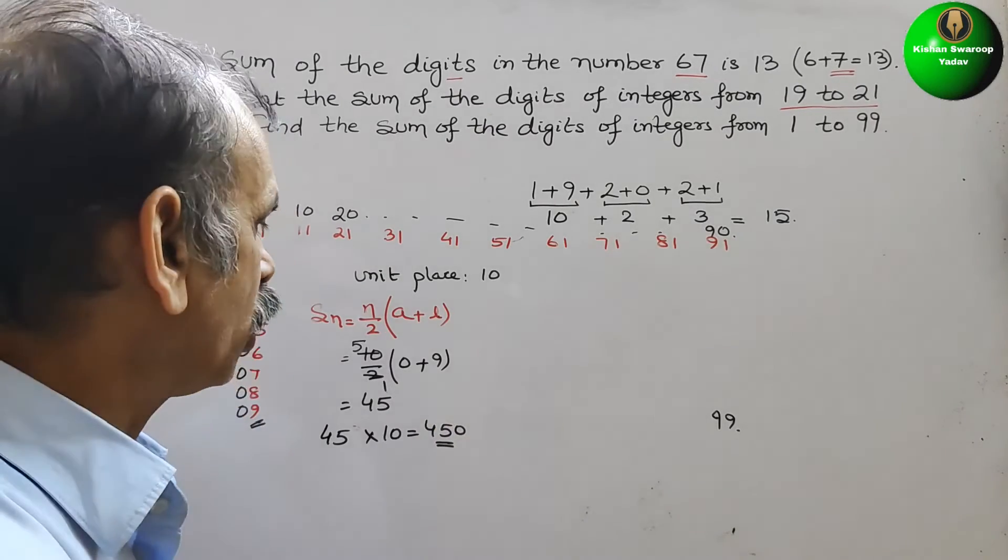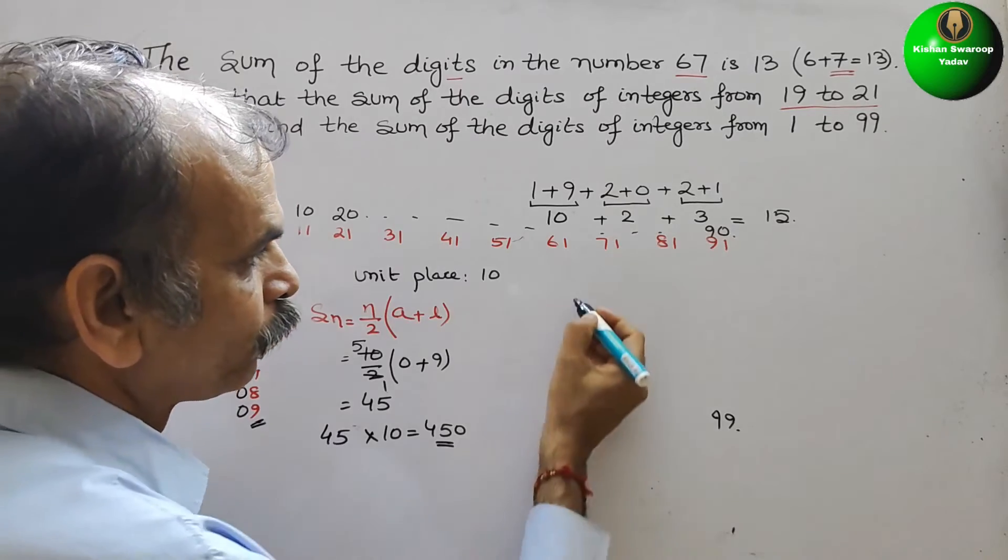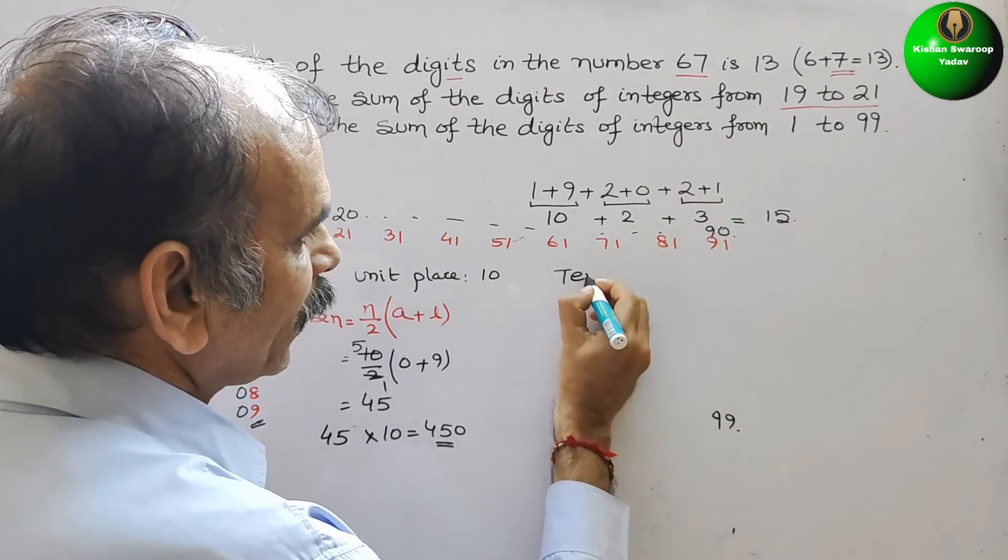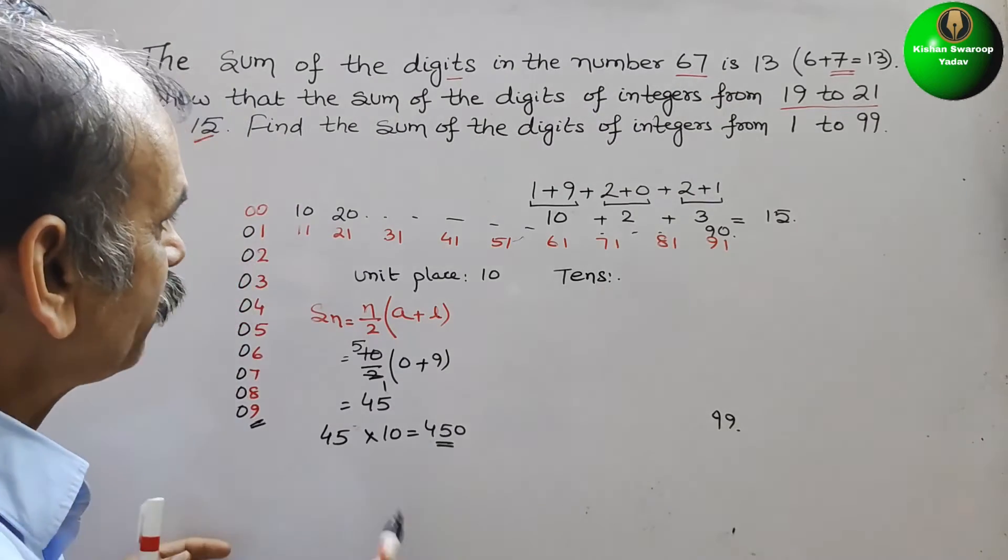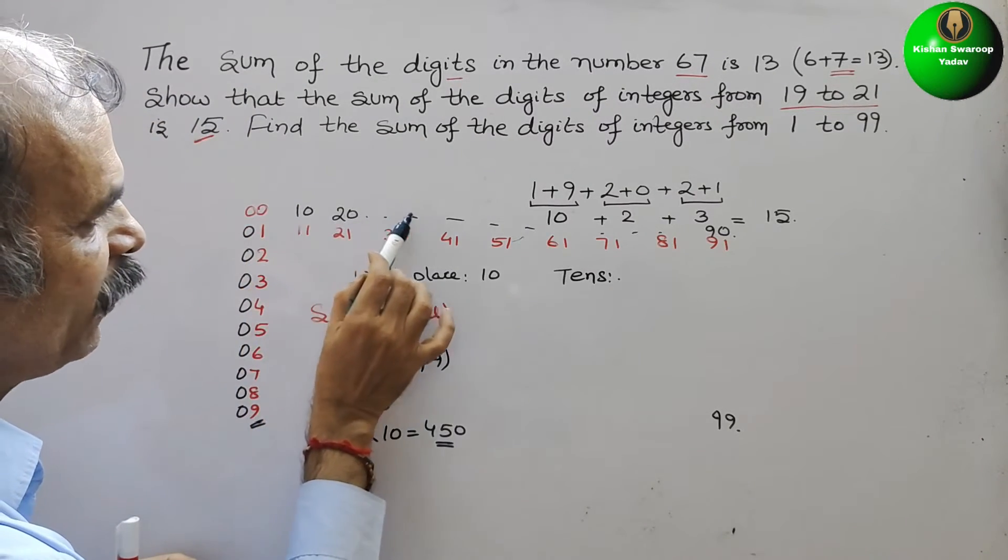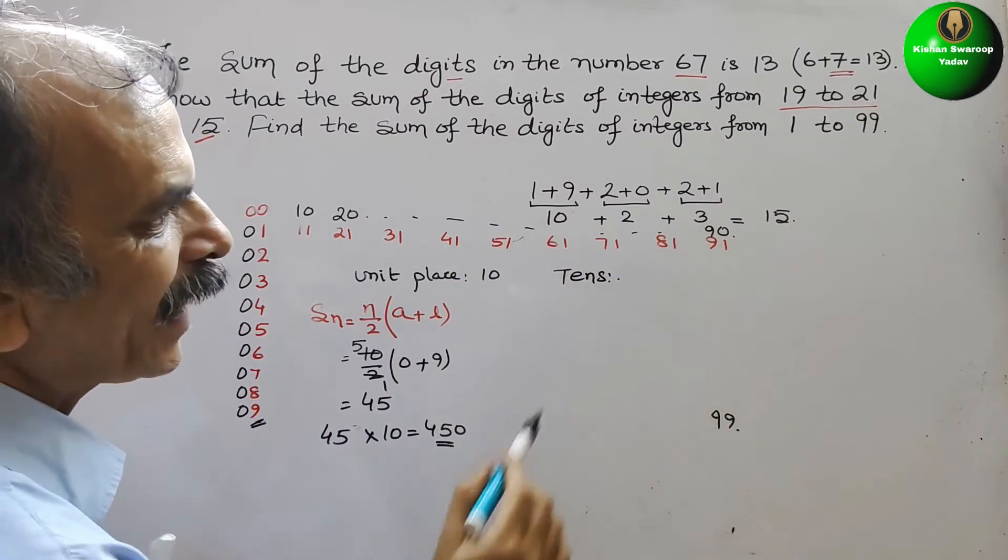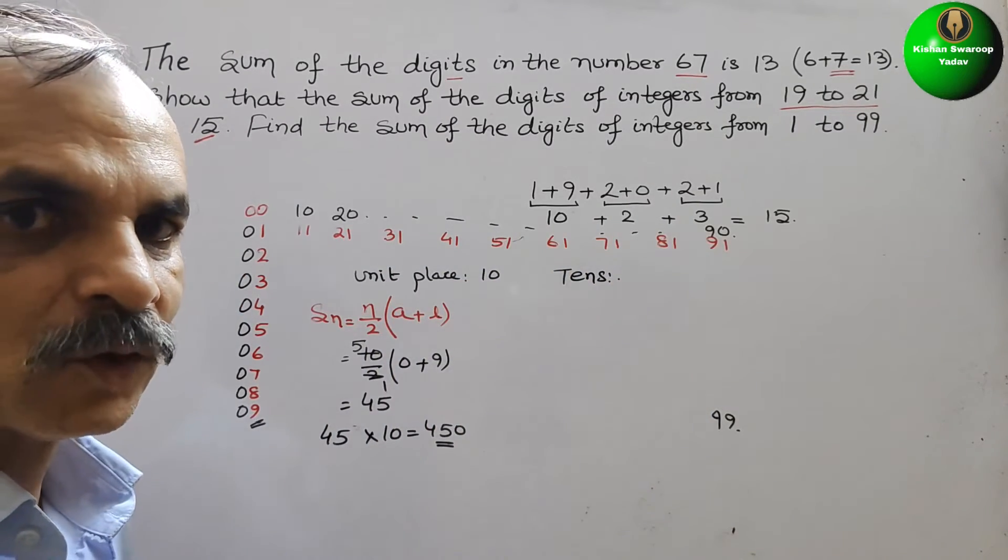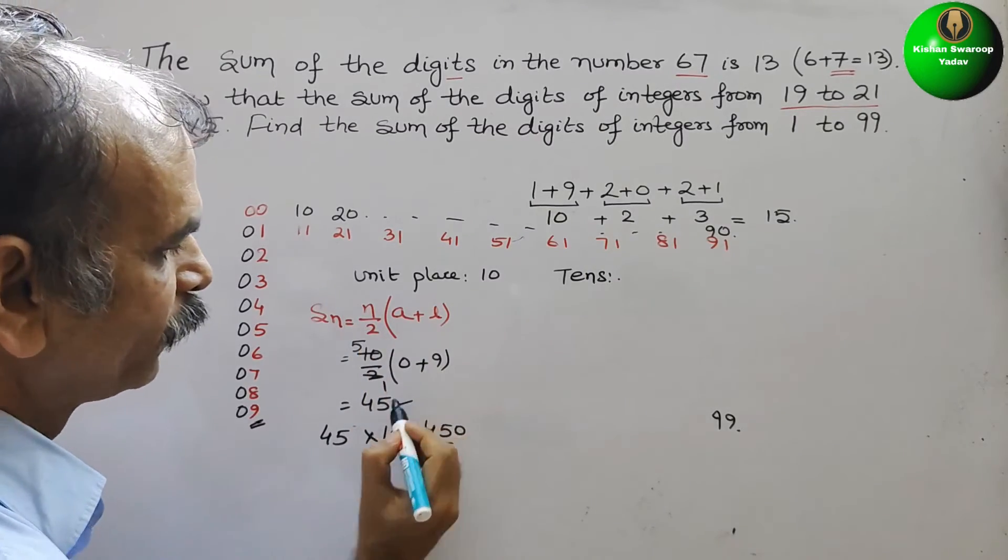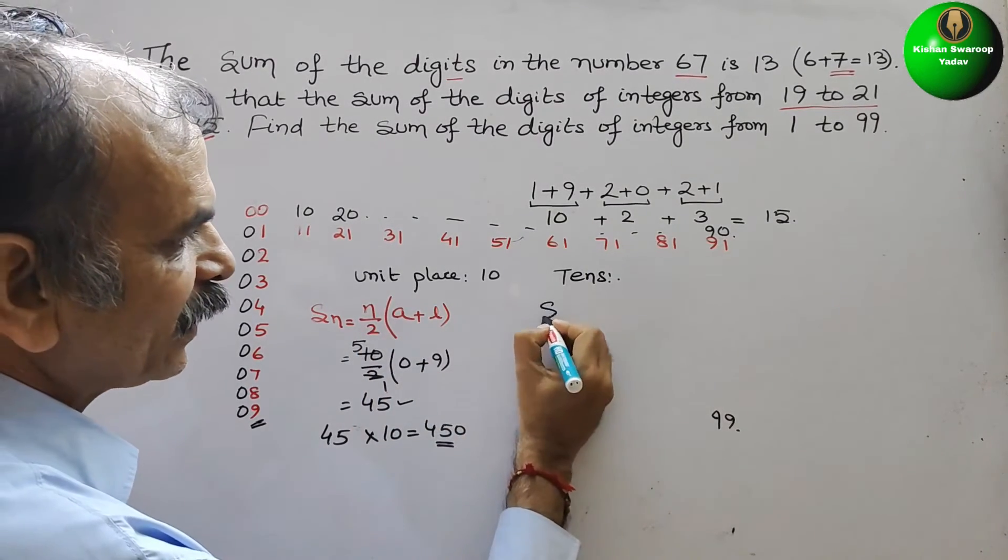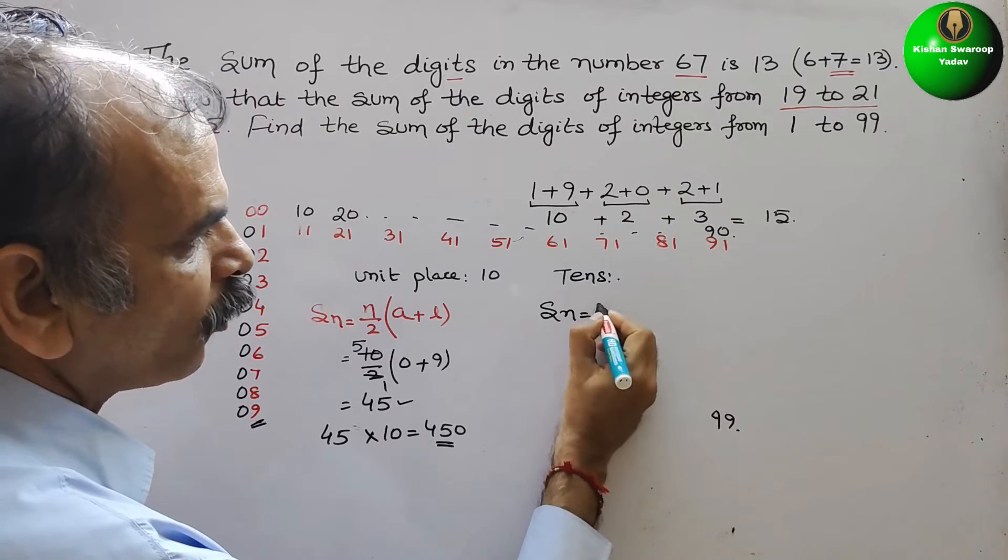Now comes to your tens place. Tens place also you can see the same thing: 0, 1, 2, 3, 4, like that it will be up to 90 only. So sum is what? 45. So we can say the sum is also 45.